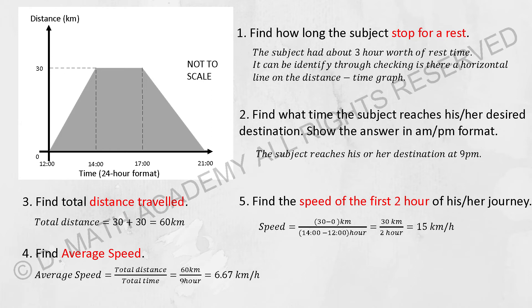Question 3: find the total distance traveled. You're not required to calculate the area. Simply look at the distance traveled. From 12 to 14 is 30 kilometers, and from 17 to 21 is another 30 kilometers. The total is 60 kilometers.